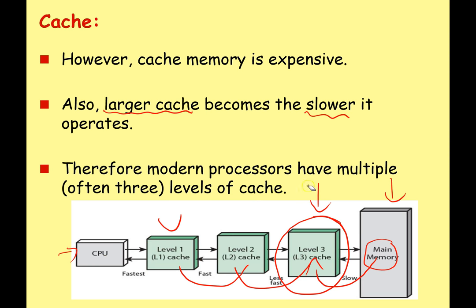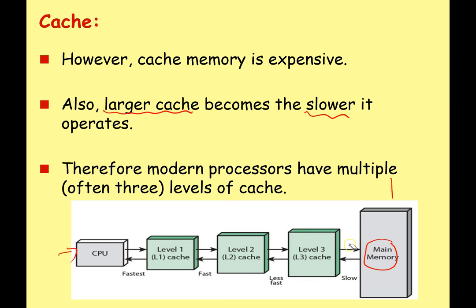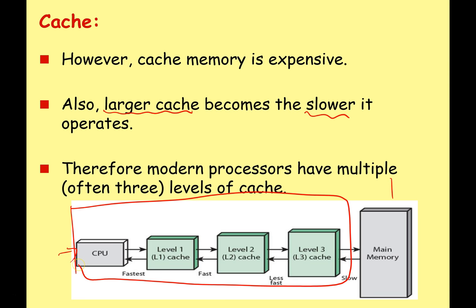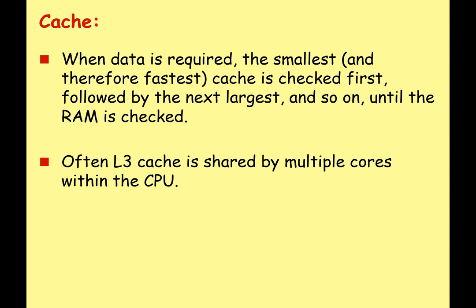On a modern CPU, you're often looking at cache divided into three levels, and these are usually all on board the CPU — all part of the CPU. Then you've got the main memory, which is connected through the different buses and located on your motherboard. When data is required, the smallest and therefore fastest cache is checked first, followed by the next cache, and so on, until eventually you get to the RAM. Usually, if you're using a multi-core system, each core has its own level one and level two cache memory. Usually, level three cache is shared across multiple cores within the CPU.